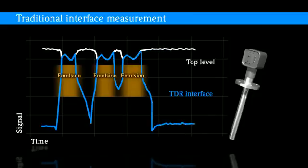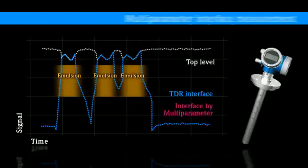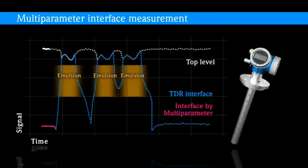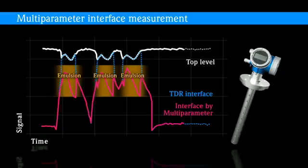It is only LevelFlex FMP55 multi-parameter which guarantees a redundant measuring system by the combination of guided radar and capacitance technology, thus safeguarding the detection of the interface and the overall level, also in case of emulsions.